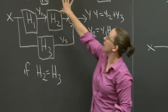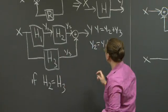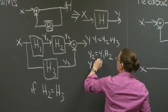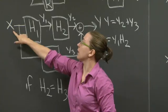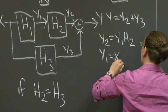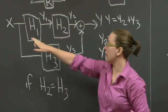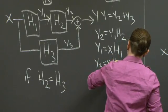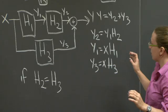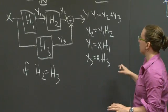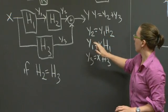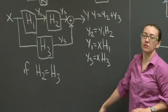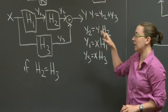y2 is going to be y1 times h2, where h2 is some system function. And it probably, you know, is abstracting away some combination of gains, delays, and adders like this one here. y1 is going to be x times h1. And y3 is going to be x times h3. Now I've got all my expressions in terms of either y or something for which I have an equivalent expression for x. So I can do my substitutions, come up for an expression for y over x in terms of h1, h2, and h3.